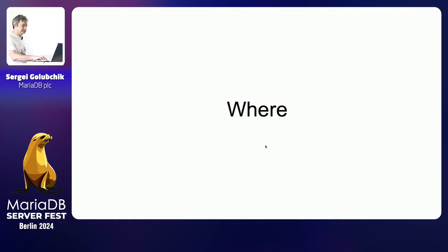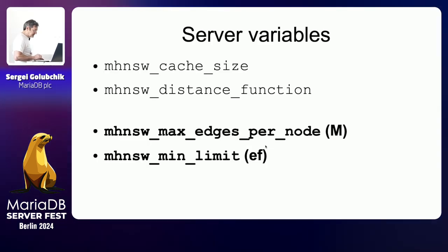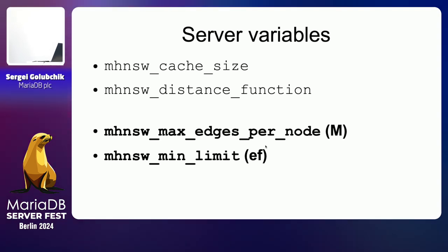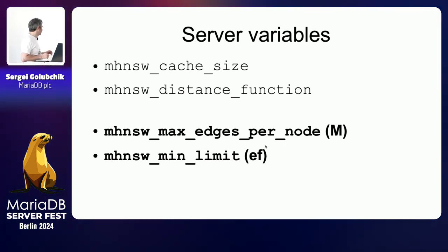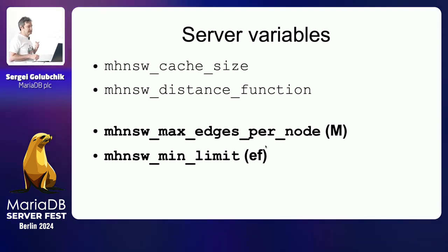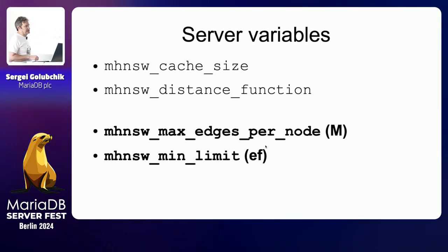Question about what M and EF mean in the parameter names: for those who have read the paper on the HNSW algorithm, this is called EF and M in the original paper. Some vector databases use that nomenclature directly. I used more verbose names instead, which might still be too cryptic for users — so suggestions for renaming are welcome.